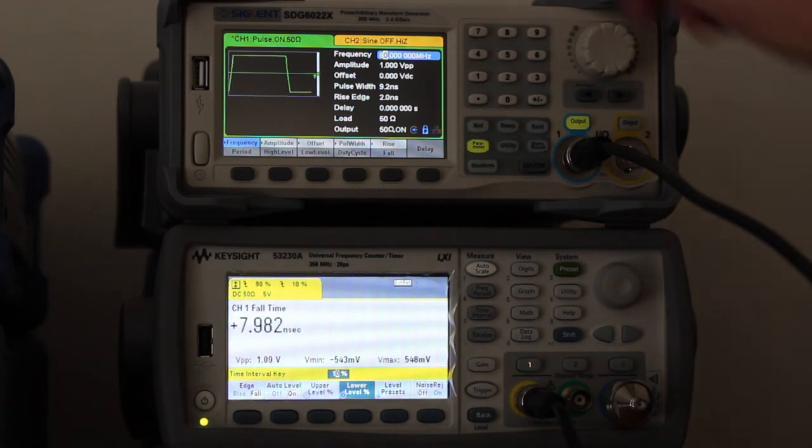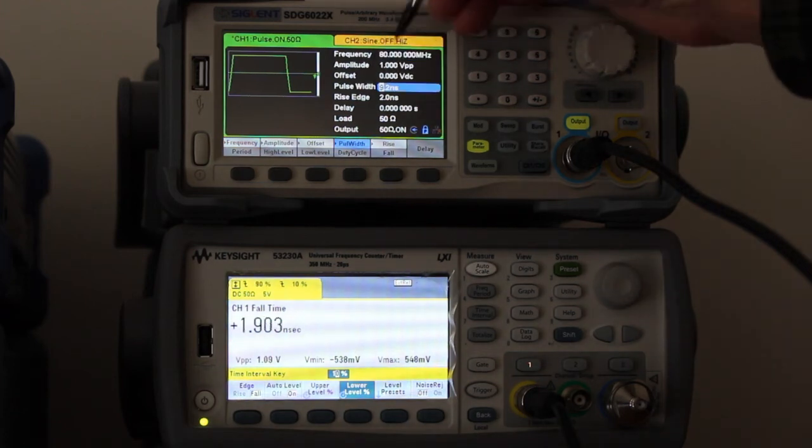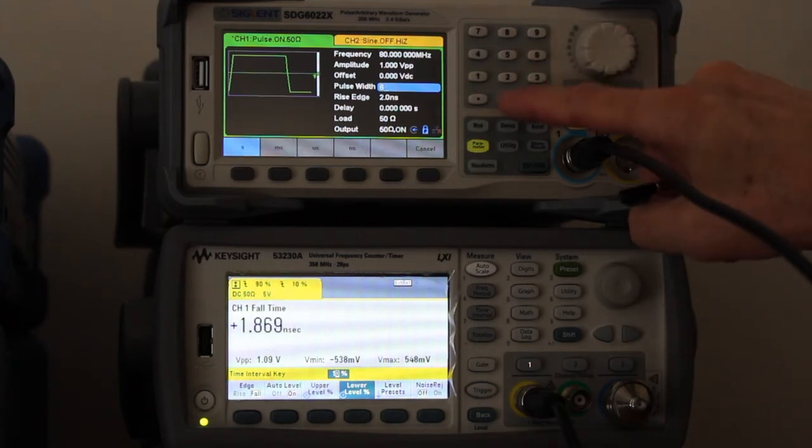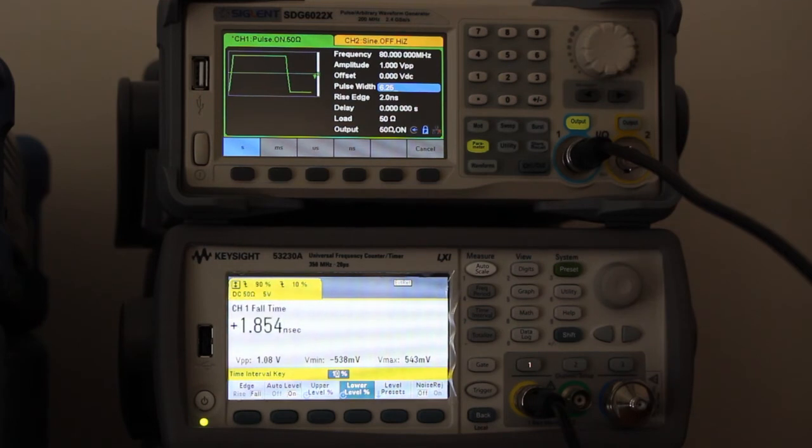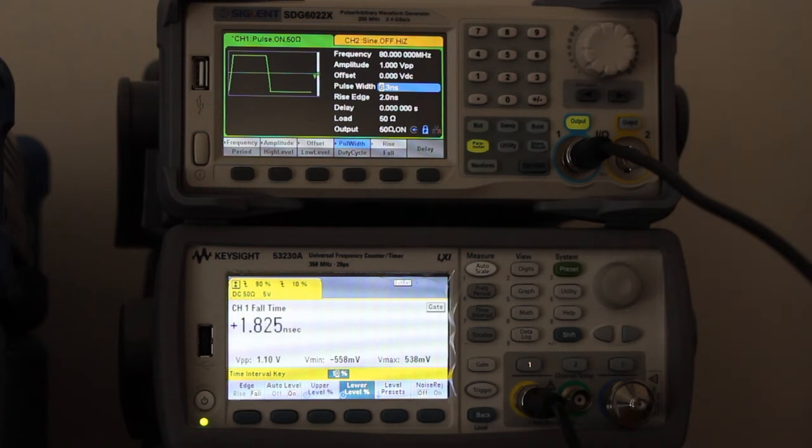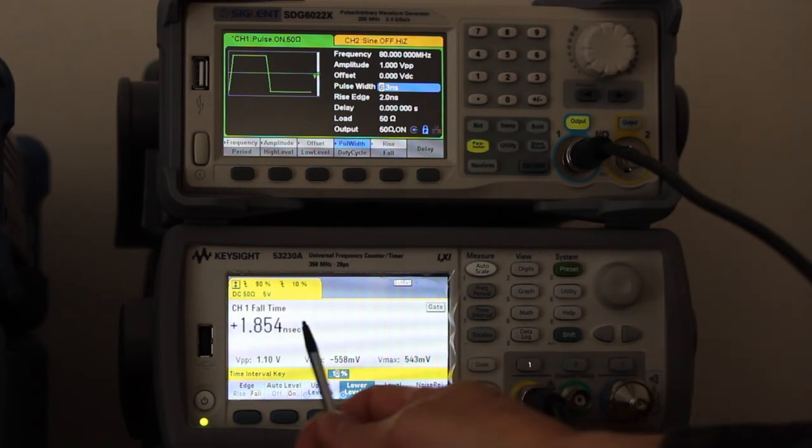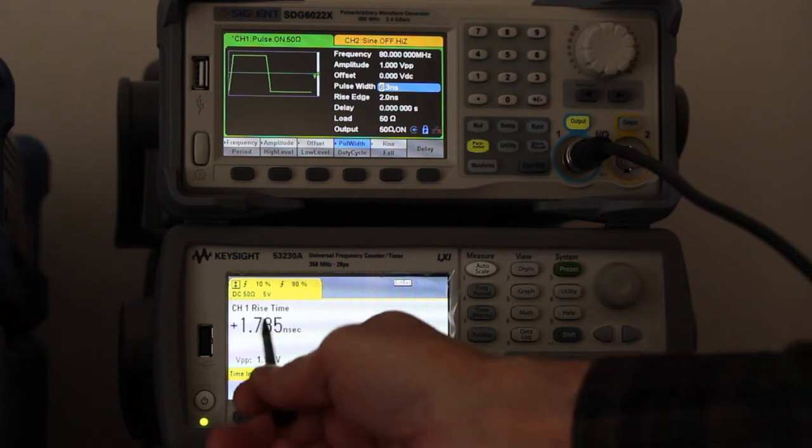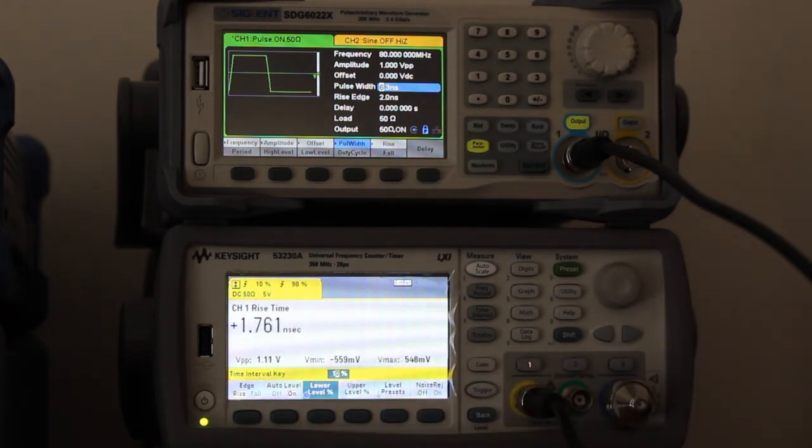80 megahertz and pulse width to 6.25 nanoseconds. Still measuring less than 2 nanoseconds, the fall time and also the rise time.